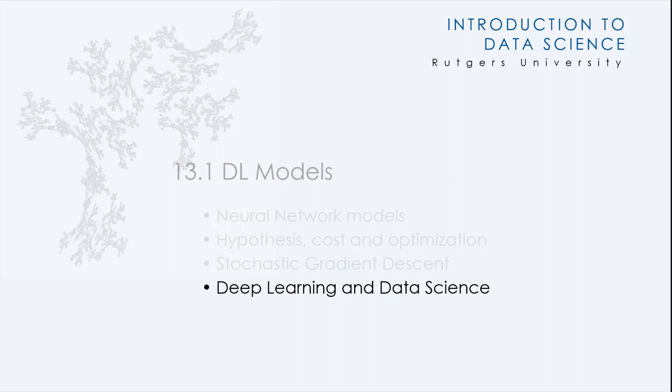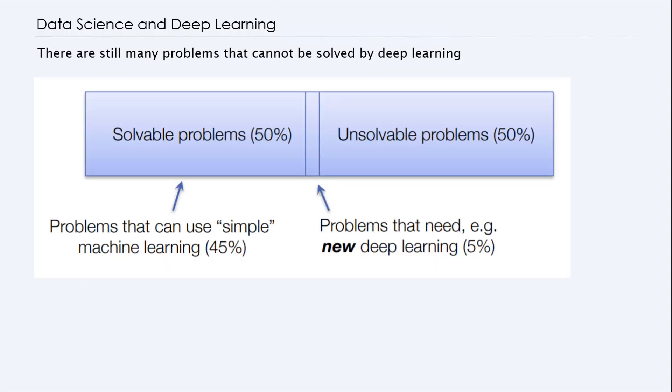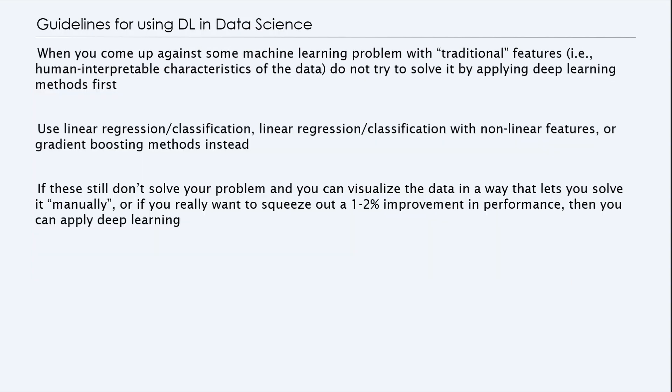So finally, we will talk about deep learning and data science and the role of data science in the deep learning perspective. Basically there are still many problems that cannot be solved by deep learning. There's probably 50% of the problems are solvable using a very simple machine learning model like linear regression. And there are many problems that are unsolvable perhaps at the moment. And the problems that need deep learning are probably about 5% of the problems that you want to apply to. So deep learning is not the solution to every problem that you have.